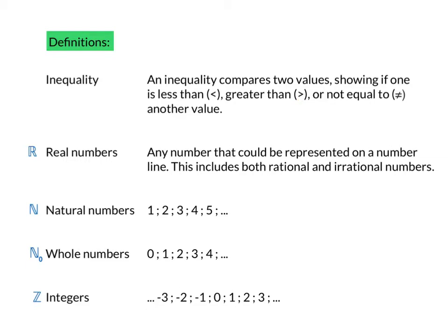An inequality is different from an equation, because with an equation you normally have one solution, or two solutions, or three, or maybe no solutions. For example, if you say x is equal to 5, there's only one answer. However, if I say x is greater than or equal to 5, there are many numbers that fulfill that inequality — x could be 6, x could be 10, x could be an irrational number like 5 plus root 2. There are many numbers that would fit into the inequality x is greater than 5.